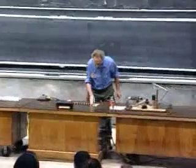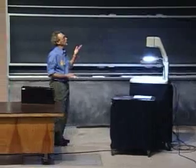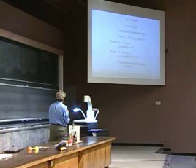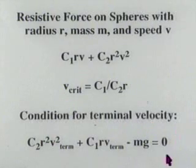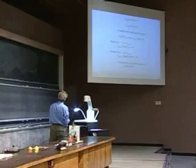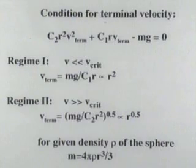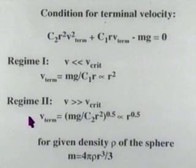I have a view graph on the web so you don't have to copy it. It summarizes everything with all the key equations: the resistive force magnitude, the critical velocity, and the terminal speed condition. Regime one has terminal speed proportional to r squared for objects of given density, and regime two has terminal speed proportional to the square root of r.